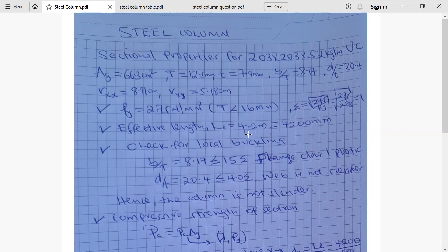And then we calculate the epsilon naught, which is given by the square root of 275 divided by the design strength, which is PY. Our case, PY is 275. Square root of 275 over 275 is 1.